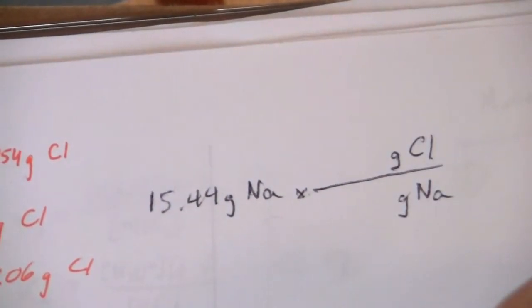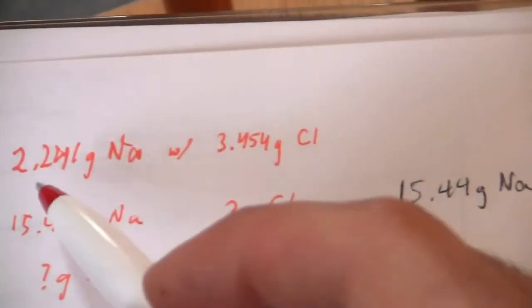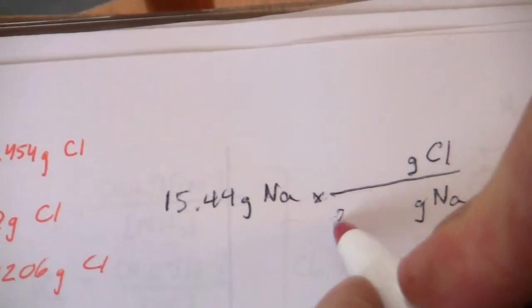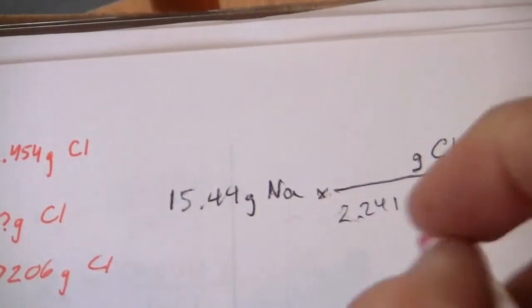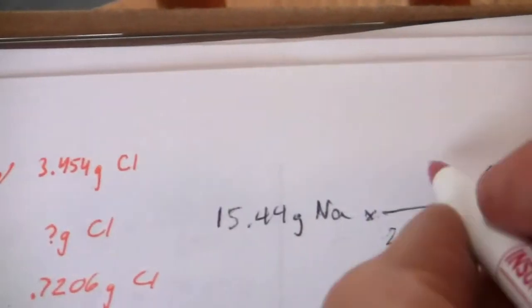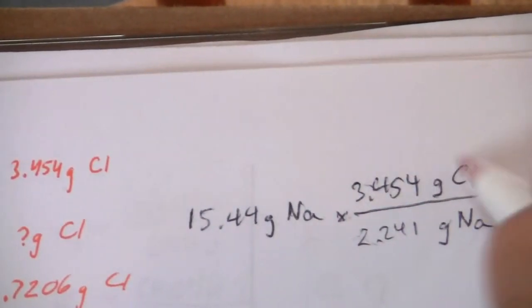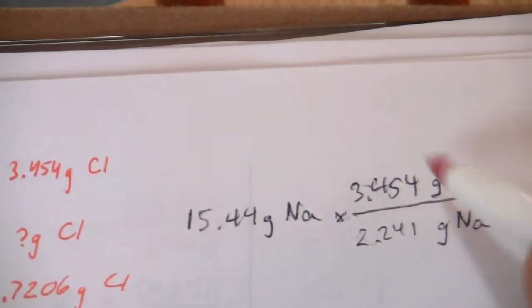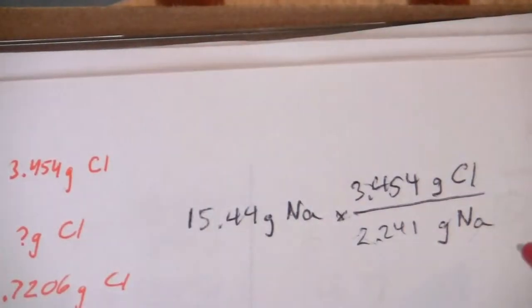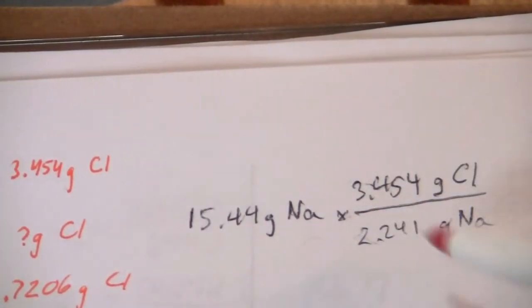And then the grams of chlorine on the top. So we know that 2.241 grams of sodium will react with 3.454 grams of chlorine. This is the proportion in this compound, and since sodium and chlorine only form one compound...